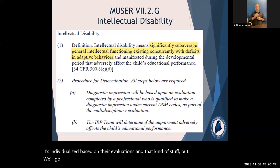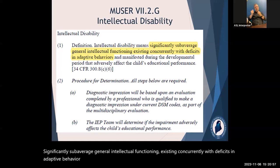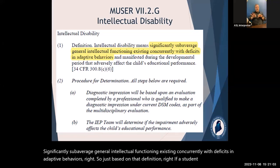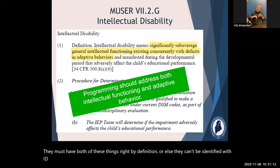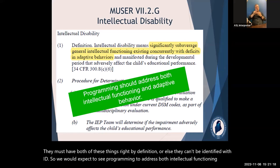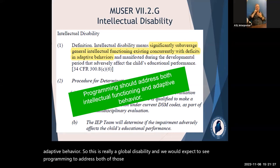Intellectual disability is defined as significantly sub-average general intellectual functioning existing concurrently with deficits in adaptive behaviors. By definition, a student identified with ID must have both. So we would expect to see programming to address both intellectual functioning and adaptive behavior — this is a global disability and programming should address both based on the definition.